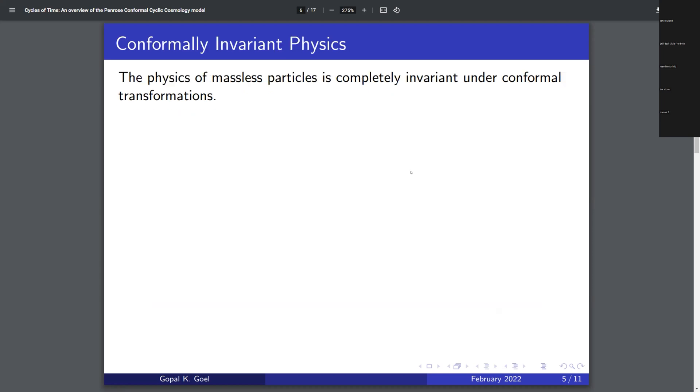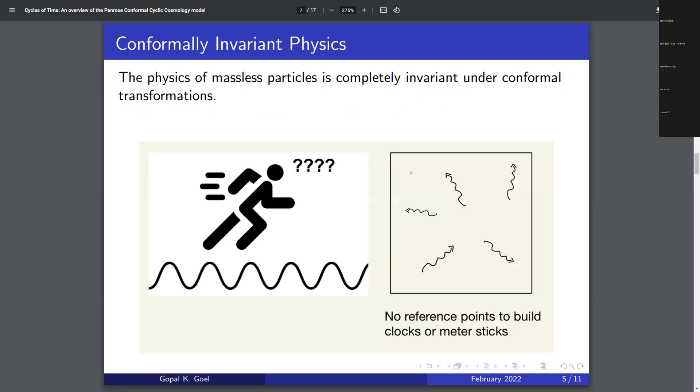So like I said before, the reason we care about this is that if I have a bunch of massless particles, then it turns out that the physics of them, you cannot say anything about distance scales, or length, or time scales. And because of that, if you apply one of these transformations which preserves angles but changes distances, the physics looks identical.